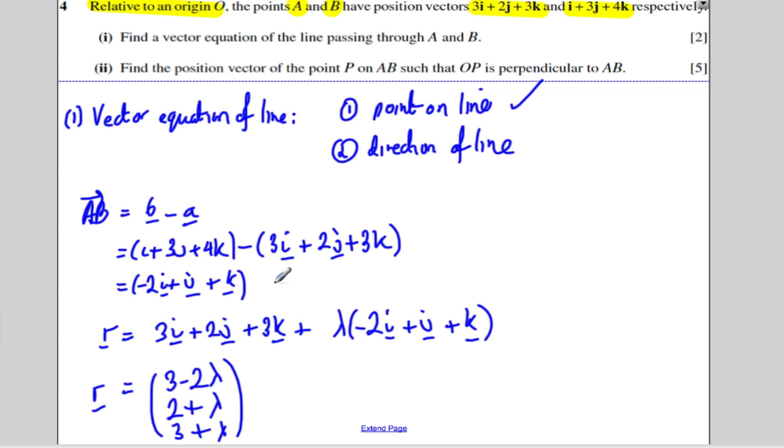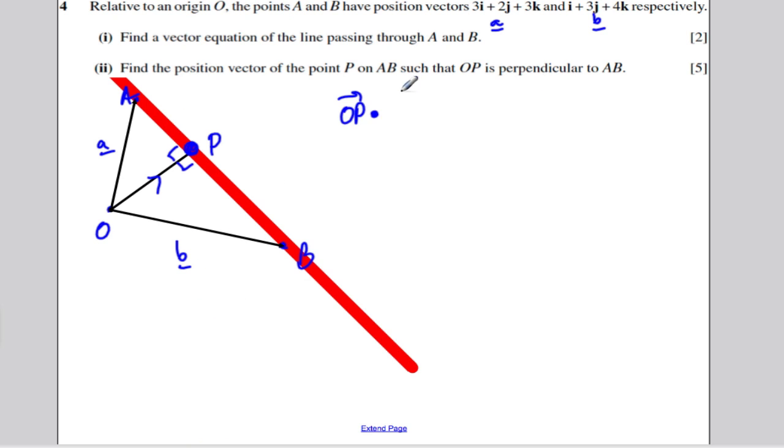So, if I dot that with minus 2, 1, and 1, then they're going to be perpendicular. This helps me find P because these two dot to 0.